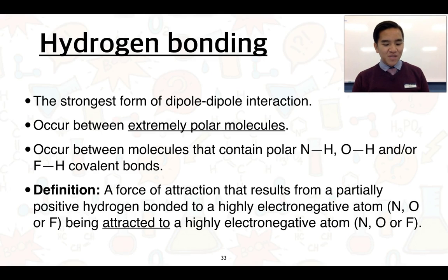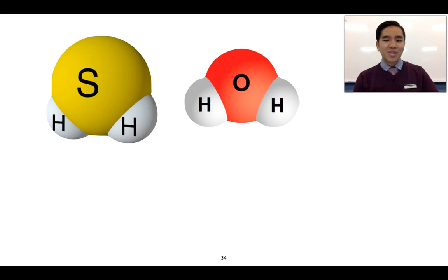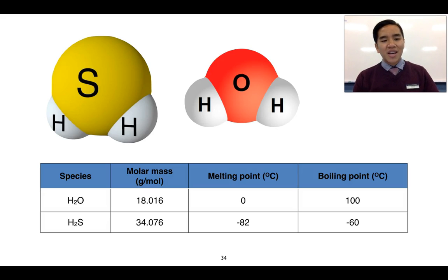For hydrogen bonding to occur, we need a partially positive hydrogen that is bonded to one of these electronegative atoms (N, O, or F), which is then attracted to another highly electronegative atom — nitrogen, oxygen, or fluorine — either in an adjacent molecule or another location on the same molecule. Going back to H₂S vs H₂O: even though water is the smaller molecule, it has the greater melting and boiling point because it can exhibit hydrogen bonding, while H₂S can only exhibit regular dipole-dipole interactions.